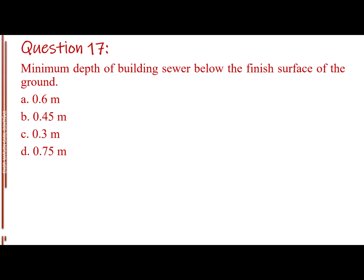Question number 17, minimum depth of building sewer below the finished surface of the ground. Letter A, 0.6 meter, letter B, 0.45 meter, letter C, 0.3 meter, letter D, 0.75 meter.